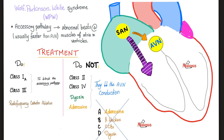What should you use instead in WPW? Slow down the ventricles — whether the impulse comes on the normal path or the abnormal path, you can slow the ventricles either way. Use class 1A or class 3 antiarrhythmics: sodium channel blockers or potassium channel blockers.